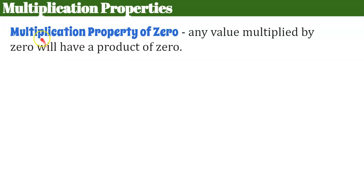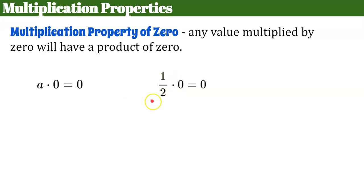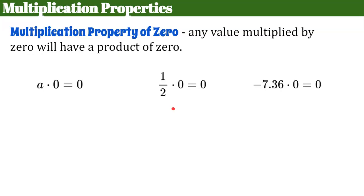Let's review multiplication properties before we begin. The multiplication property of zero states that any value multiplied by zero will have a product of zero. Any number a multiplied by zero equals zero. For example, one-half multiplied by zero equals zero, and negative 7.36 multiplied by zero equals zero. Just as with integers or whole numbers, any rational number multiplied by zero equals zero. It makes it really easy when you see a zero in a product.